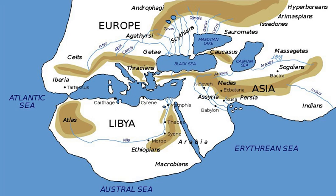In Book III, Herodotus defines 'Ethiopia' as the farthest region of 'Libya,' i.e. Africa: 'where the south declines towards the setting sun lies the country called Ethiopia, the last inhabited land in that direction. Their gold is obtained in great plenty, huge elephants abound, with wild trees of all sorts and ebony, and the men are taller, handsomer, and longer lived than anywhere else.'